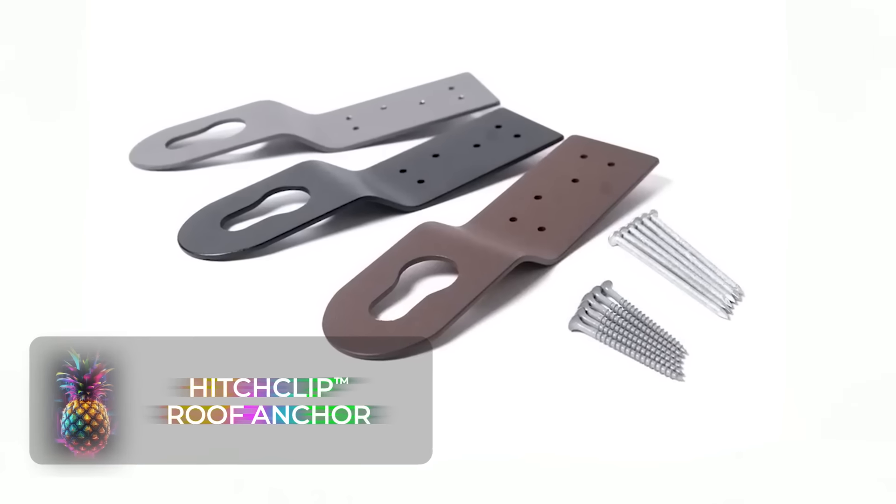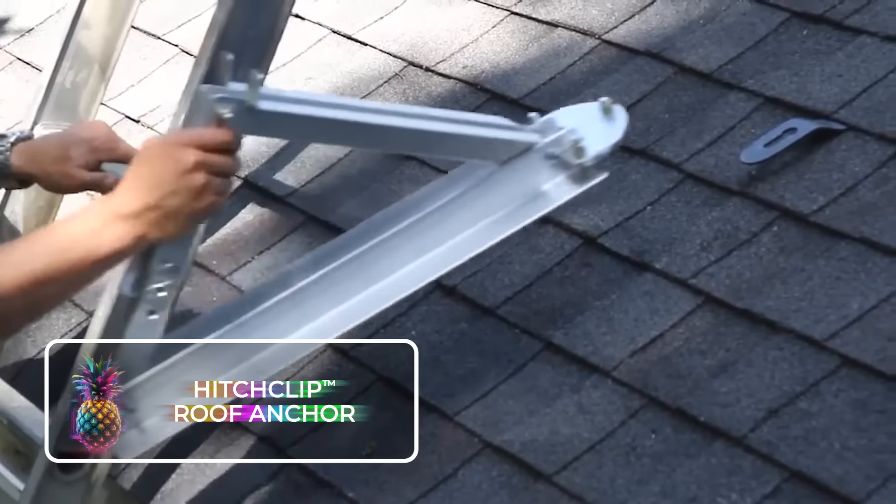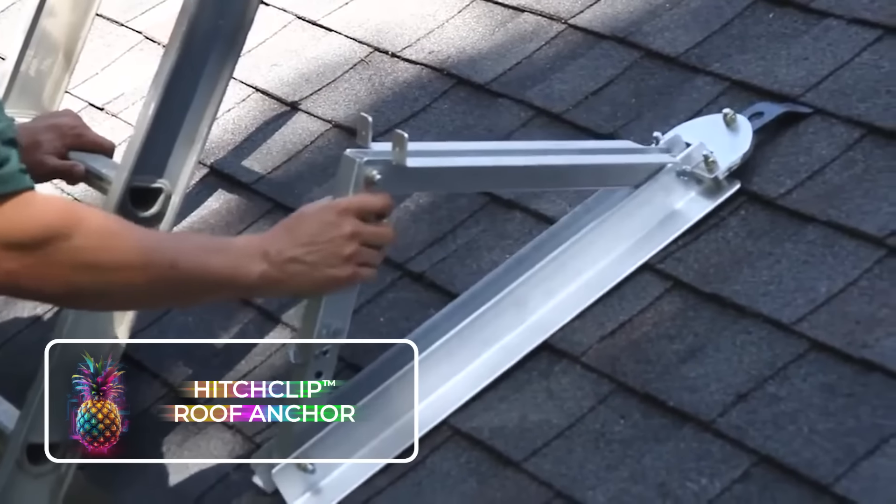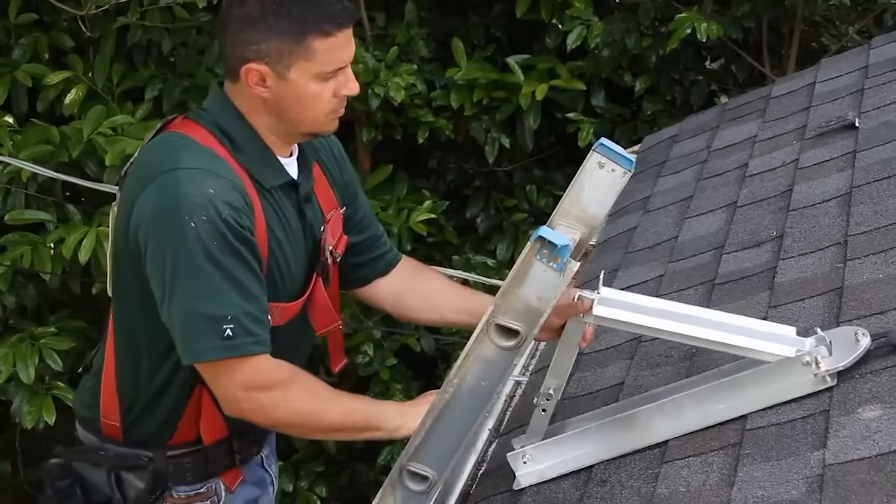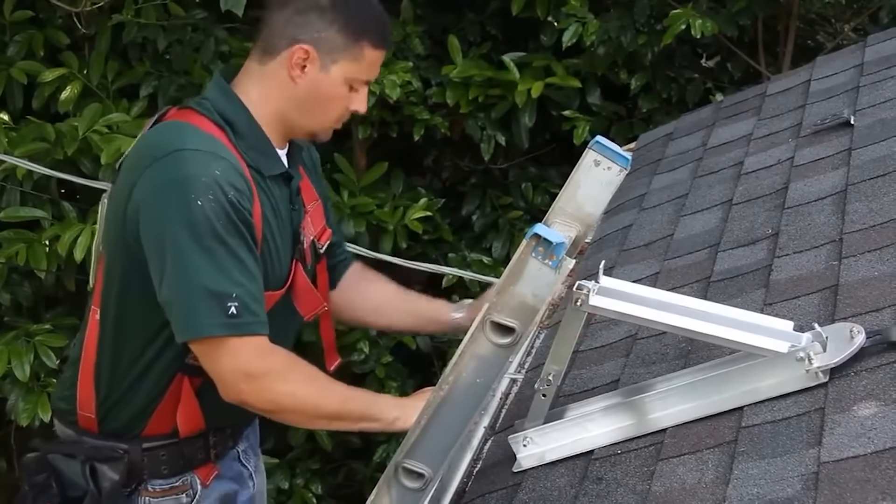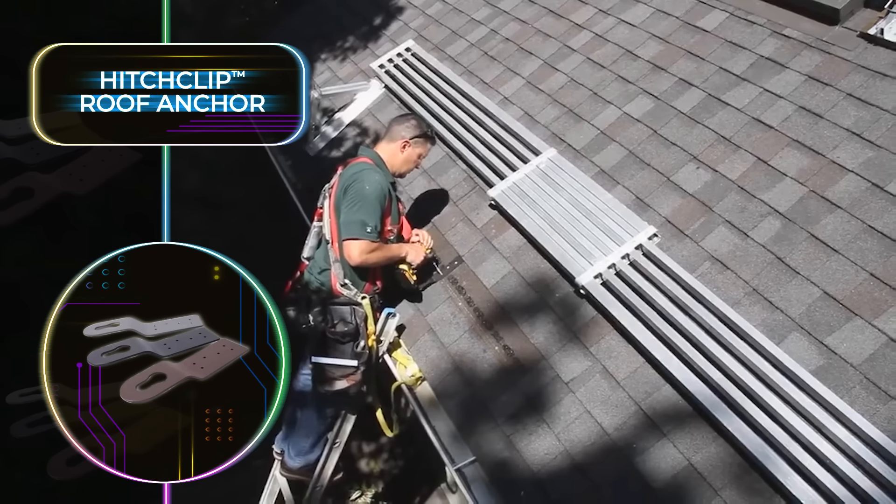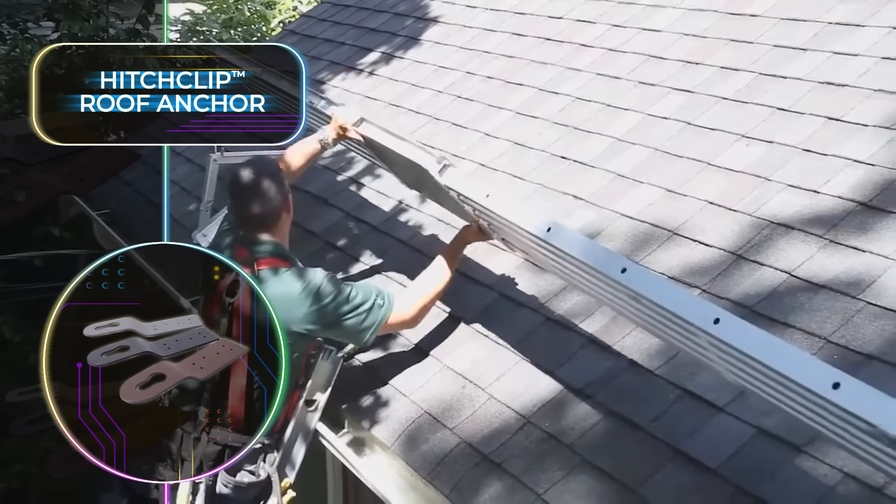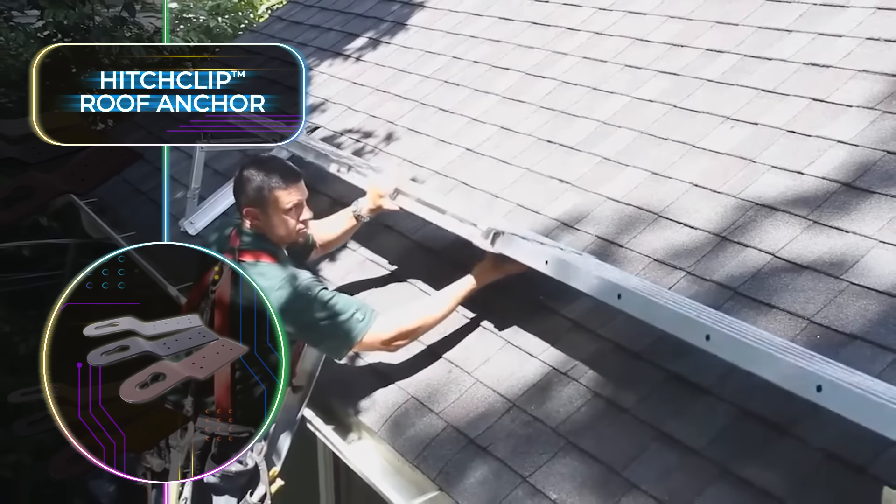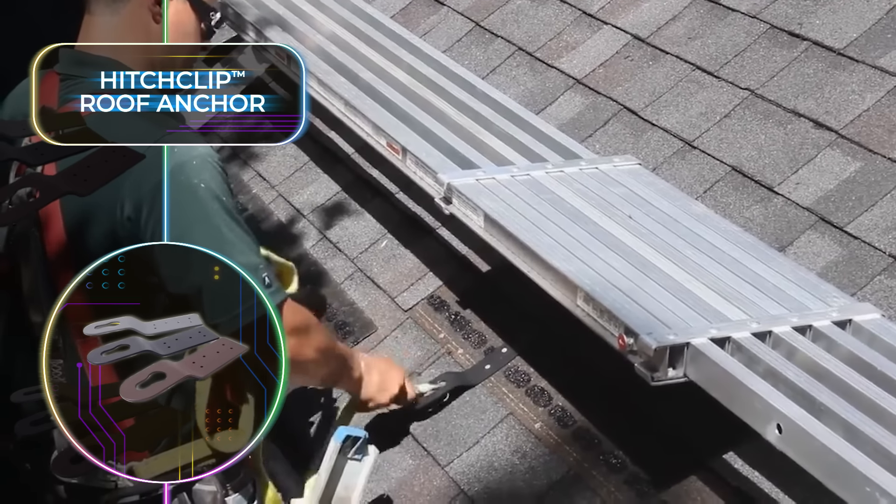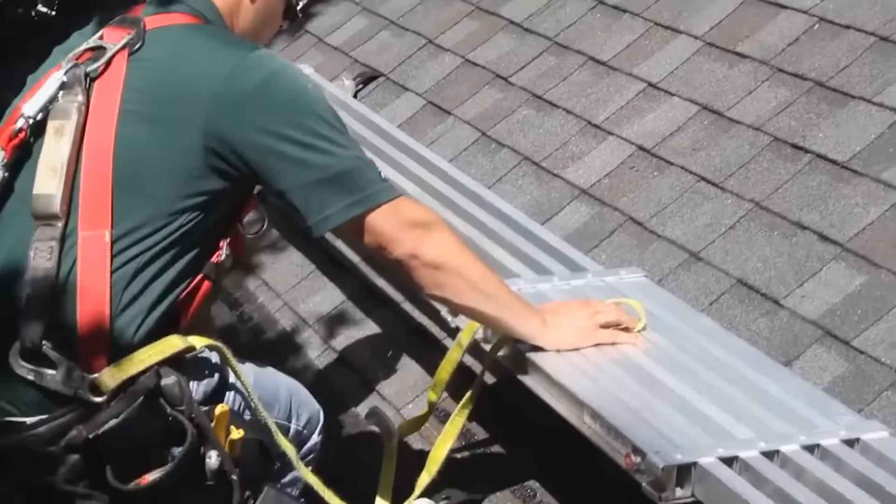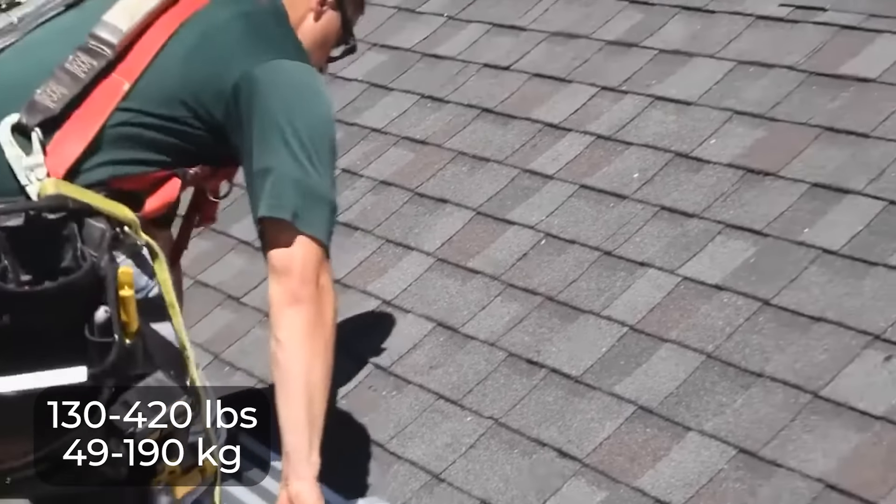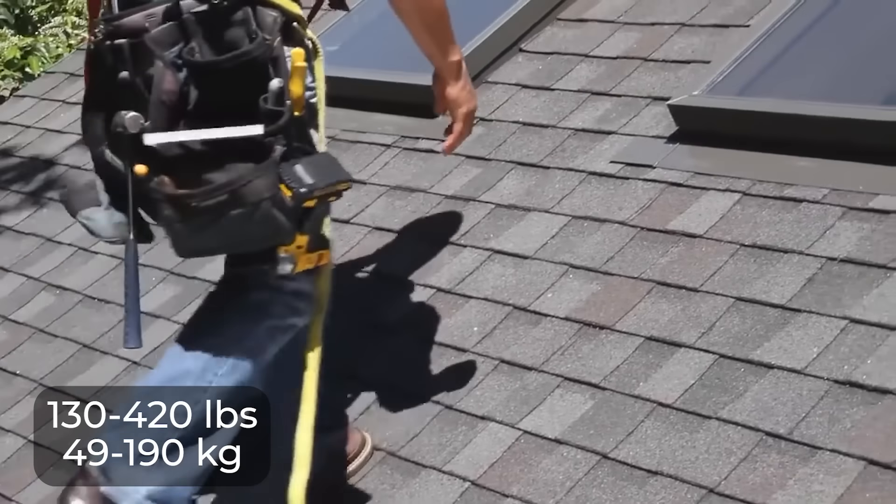Hitch Clip Roof Anchor. Peace of mind has never been easier to achieve than with this new roof anchor from the Hitch Clip Group. Crafted from sturdy aluminum, this system offers a perfect balance of toughness, power, durability, and lightweight construction. Workers can rest assured that their safety is well taken care of because it offers incredibly robust protection with its high load capacity and tensile strength.